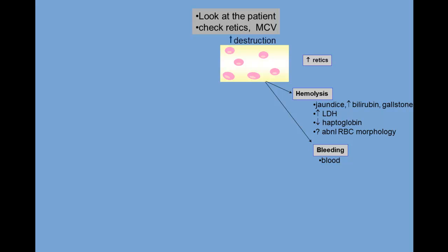The hemolysis patient is jaundiced, has high bilirubin, and perhaps bilirubin gallstones. The LDH is elevated, haptoglobin low, and there may be abnormal red cell morphology. The bleeding patient will often have an obvious bleeding source, although there are common places for bleeding to hide, like the GI tract.